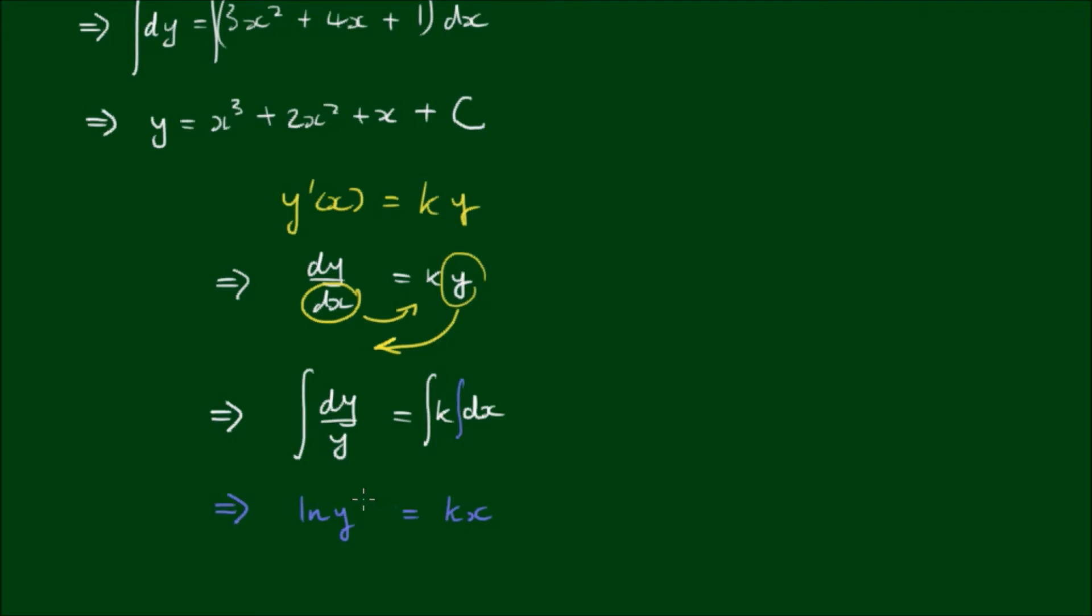The constant stays at the front and formally we have integration constants on both sides but since both of these are constants we really only need to show it on one side. So we can write the natural log of y equals kx plus an integration constant c. We haven't finished this yet because we've still got a log of y rather than y on its own.